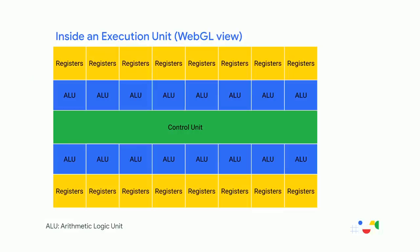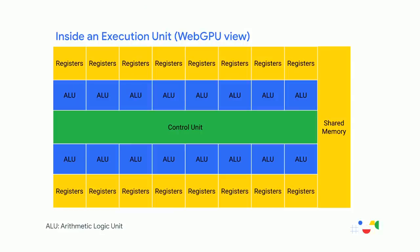In WebGL, ALUs within an execution unit cannot talk to one another — they have no way to communicate. But in practice, modern GPUs have a new shared memory region in each execution unit where ALUs can share data with one another. It's like a memory cache in that it's much cheaper to access than main GPU memory, but you can program it directly and explicitly. A big benefit of GPU Compute in WebGPU is giving developers access to that shared memory region.